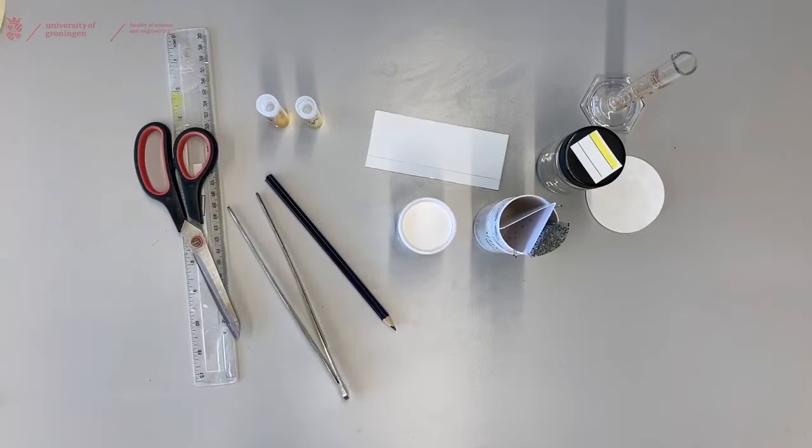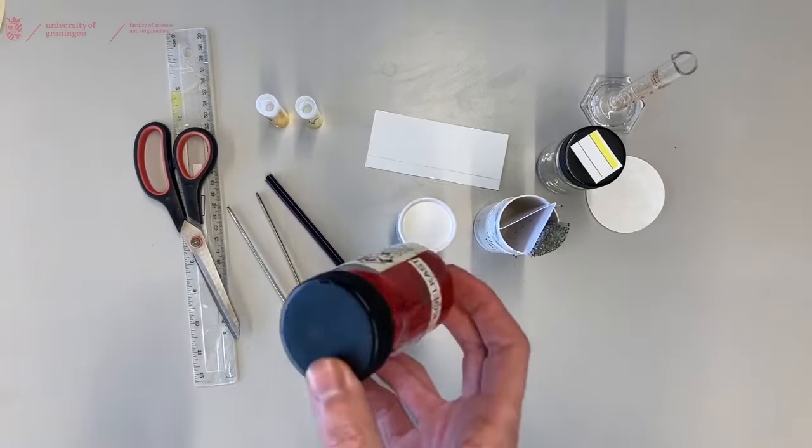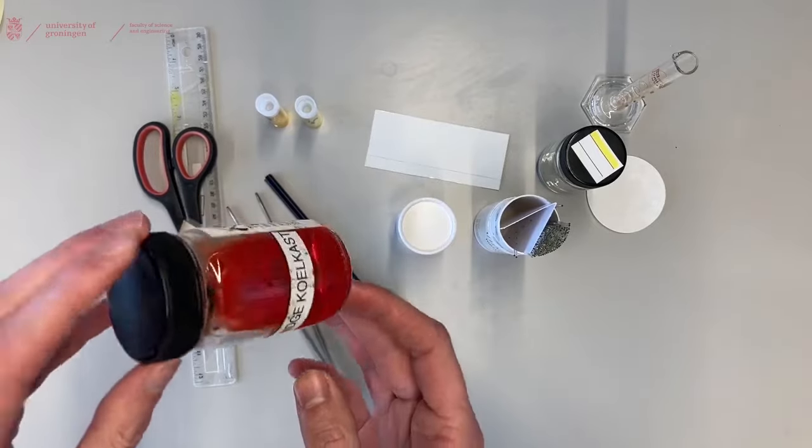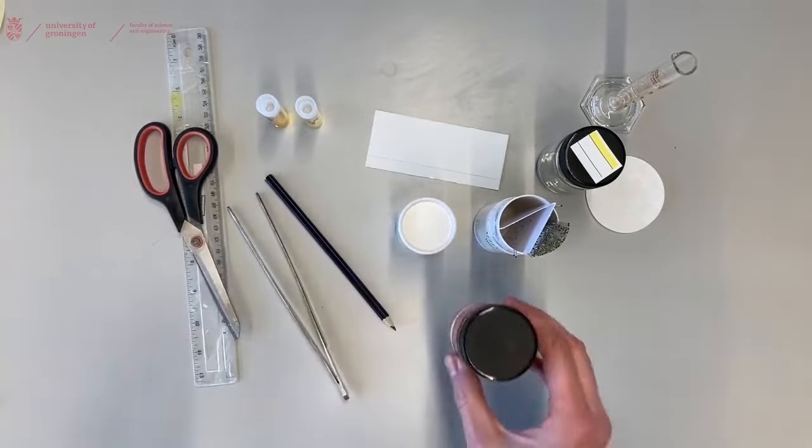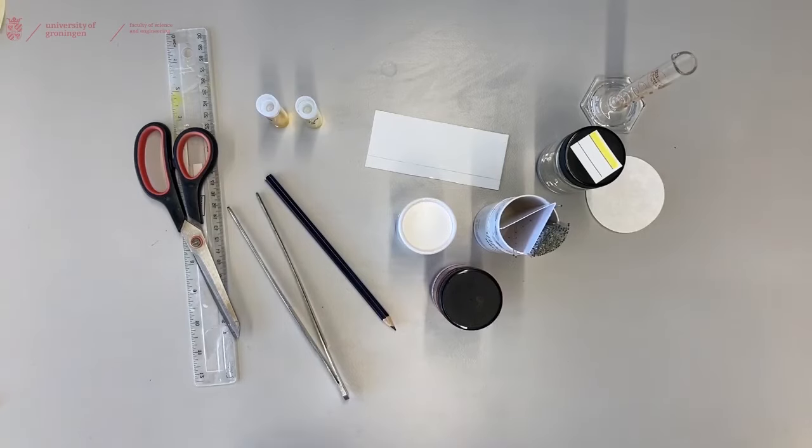You'll need a scissor to cut your TLC plate to size. And generally you will need a visualization agent that can be a stain, in this case anisaldehyde. It could also be that you can use a UV light or that your product is just visible by the naked eye.